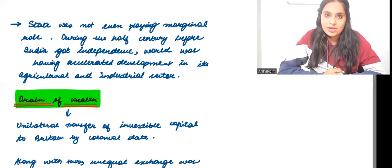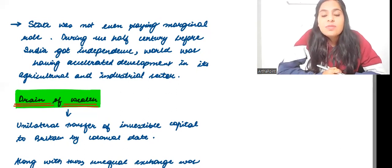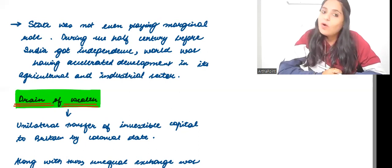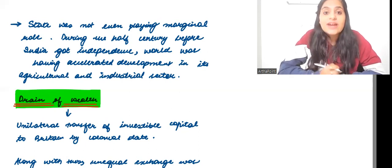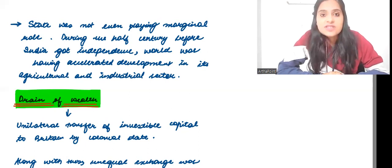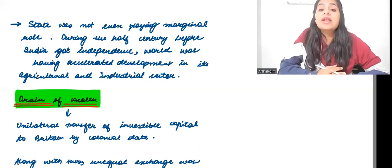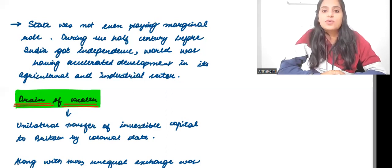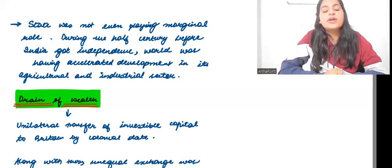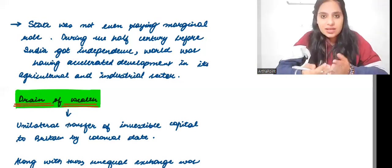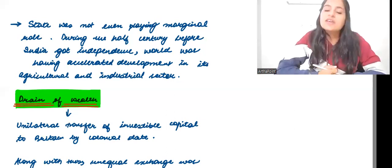We were just setting up the governments. With timing, like we had the first five-year plan, then second five-year plan, then third five-year plan. As we made these five-year plans, we started realizing what is the role of the government. But till that point, we were not aware of exactly how to run this big population with no resources. During the half century before India got independence, world was having accelerated development. When we compare India from abroad, India got independence, but at that time, world was already growing.